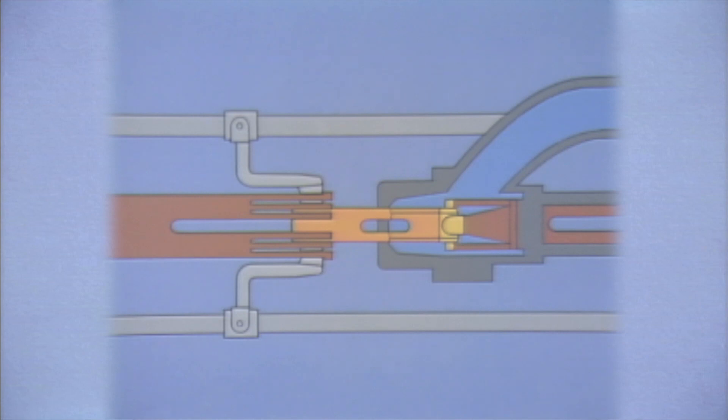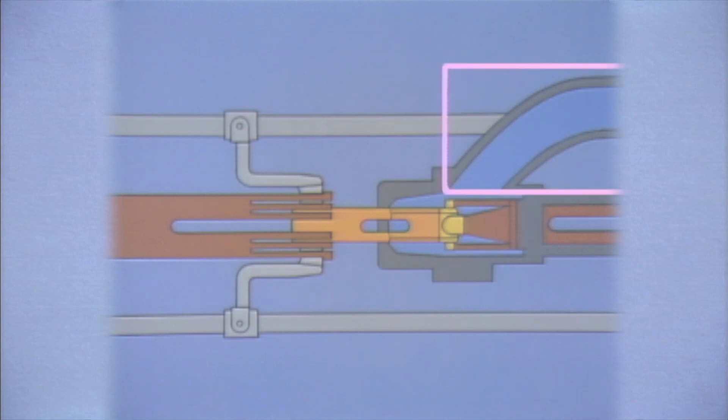We can get a more detailed picture of how the arcs are extinguished if we look more closely at one of the sets of contacts. The main features in this simplified illustration include a hollow moving contact, stationary contact fingers gripping either end of the moving contact, an arcing horn, and a blast tube.